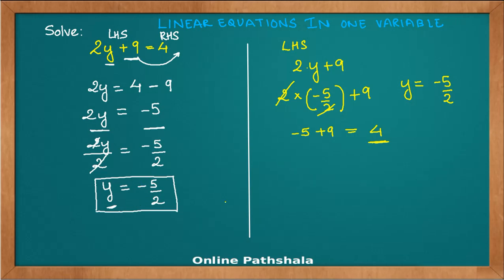What is unique about this equation is that the solution is a rational number. Earlier, whatever equations we solved we always got integers. Just to open up your mind: the solution to a linear equation need not always be an integer — it could be a rational number as well. There is nothing to be worried about. Yes, a rational number can be a solution to a linear equation.